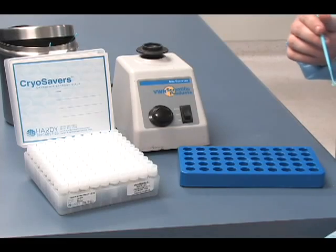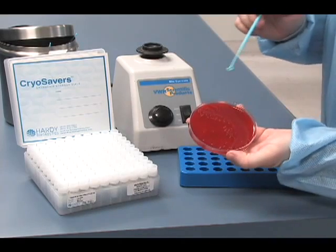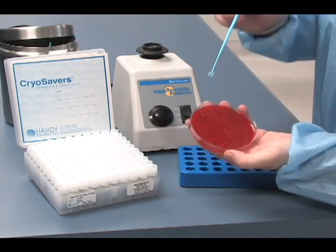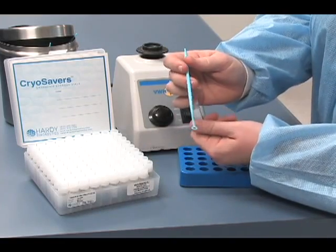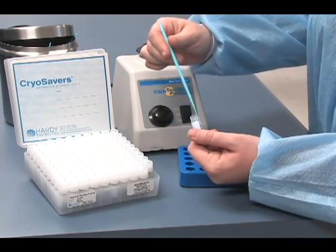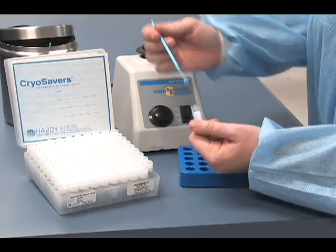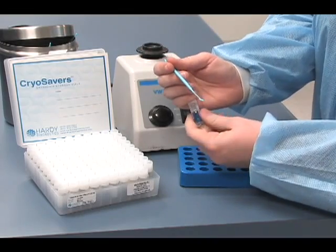The inoculation procedure is as follows. Remove several colonies from a culture that is no more than 24 hours old with your loop. Open the vial cap aseptically and swirl the loop inside the vial, then recap.